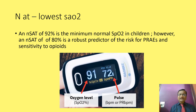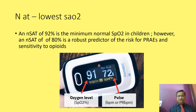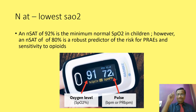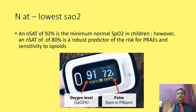Many times polysomnography is not possible; a nocturnal saturation of 92 percent moves toward risk, and if the patient reaches 80 percent saturation even once during the night, the brain senses significant hypoxia.